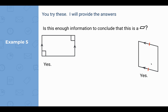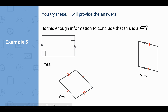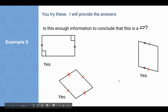This one is straight out of that new theorem we learned. If we know two things about one pair of opposite sides — namely that they're congruent and parallel — that's enough to satisfy the theorem, and that allows us to conclude that this is a parallelogram. This next one is also yes, straight out of the converse that says when you have a quadrilateral, if both pairs of opposite sides are congruent, that's enough to conclude that it is a parallelogram.